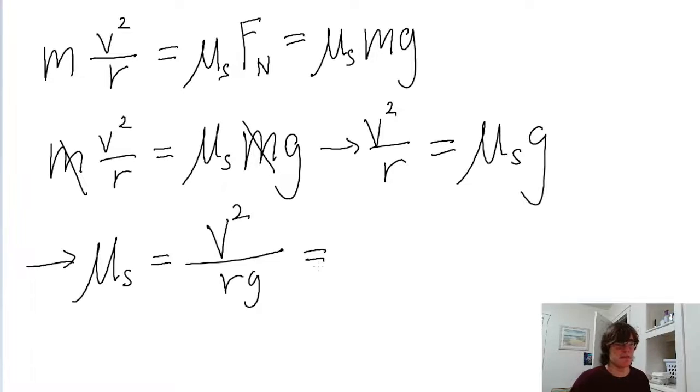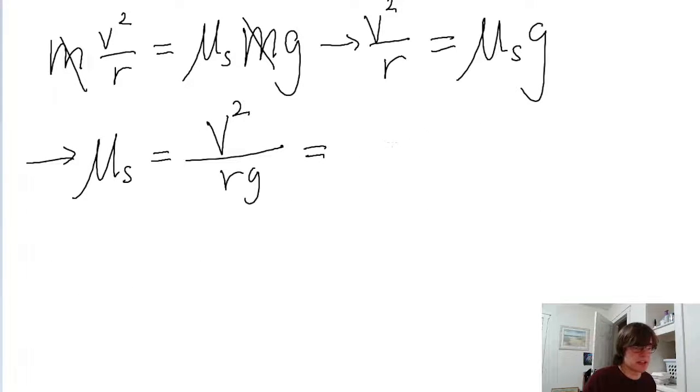And now let's just plug in the values that were given to us in the problem. So the speed of the car is given as 95 kilometers per hour. We're going to have to convert this into meters per second.